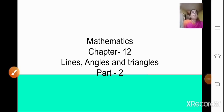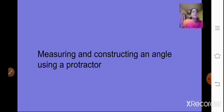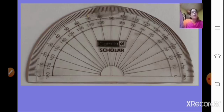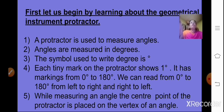Hello Sairam students. Let us continue with our chapter 12, that is Lines, Angles and Triangles. In the last class we already learned about the different types of angles and their measurement. Today let us learn through a video how to measure and construct an angle using a protractor. This is a picture of a protractor, so let us begin by learning about this geometrical instrument.